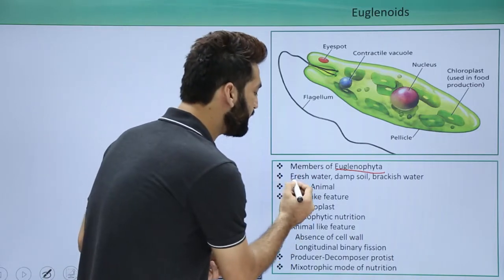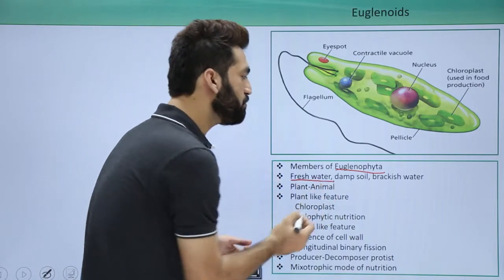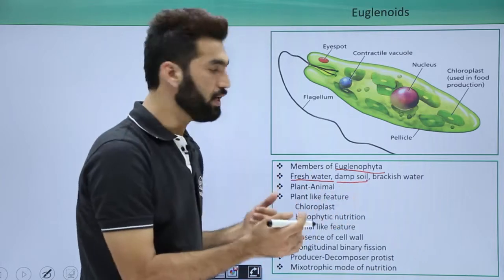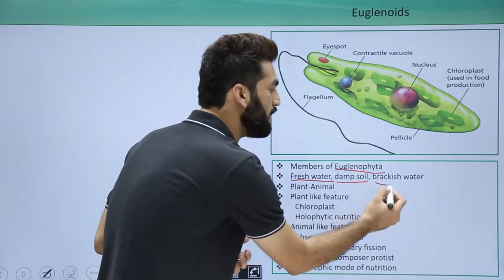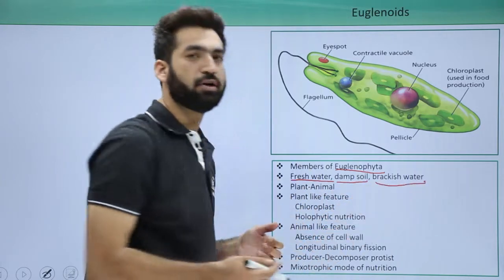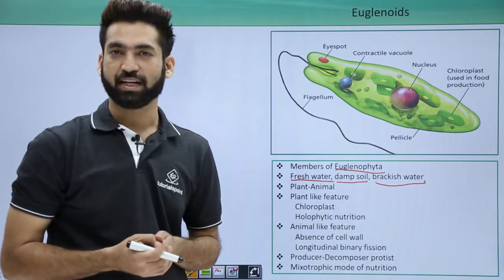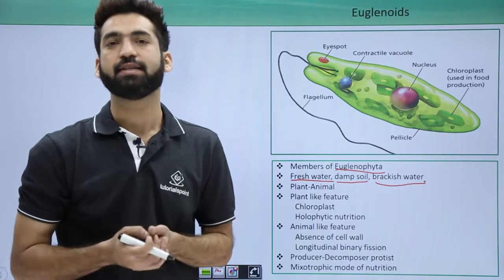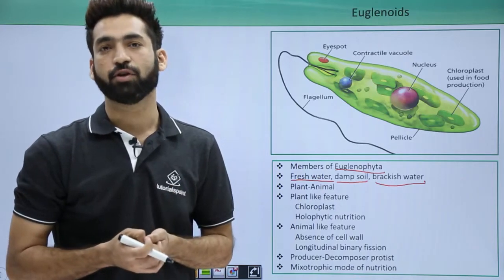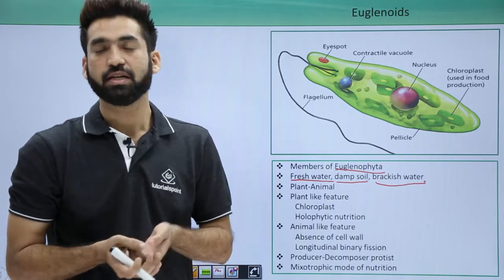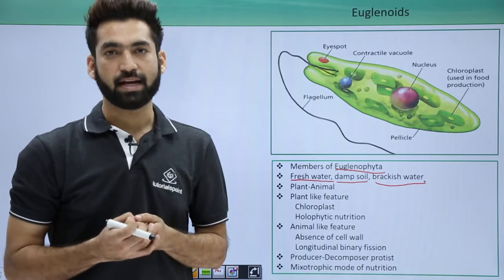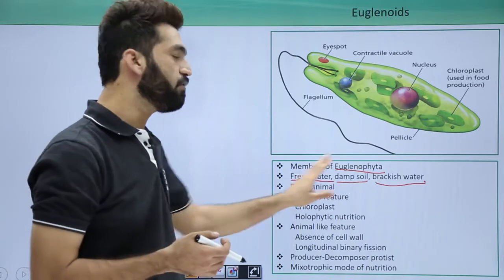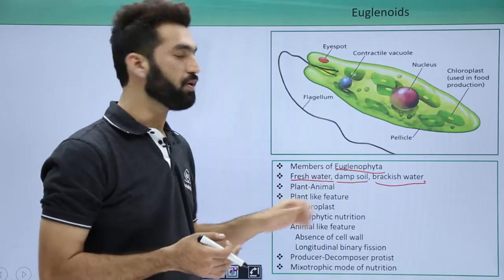Euglenoids are basically present in fresh water, but apart from fresh water they are also present in damp soil or in brackish water. Brackish water has more salinity than fresh water and less salinity than saline or marine water. So they are found in all these three places.